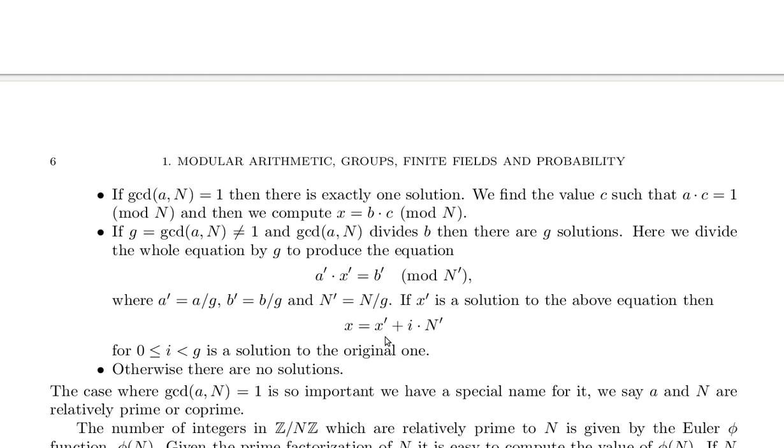x equals x prime plus i times n prime for i greater than or equal to 0 and less than G. So i is between 0 and G and could be 0 here. So i is a solution to the original equation.